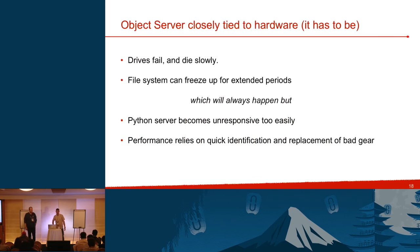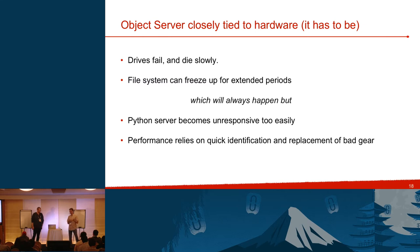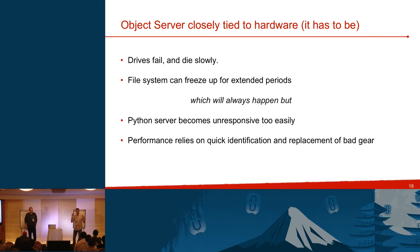The object server is tied closely to hardware — it's the lowest level you get in Swift. Drives do fail, especially when you have tens of thousands of them. The file system can freeze up. What we found is that the Python object server becomes unresponsive too easily. The only way we've been able to fix this was to have really great monitoring and really great ops — but they're still just people who have to go out and fix things manually.